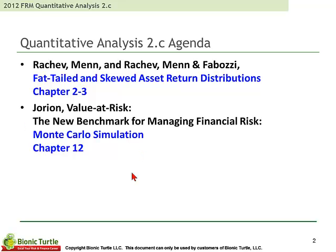We continue with two readings that reappear in the FRM from prior years. First, two brief chapters from Raychev on discrete distributions and continuous probability distributions. And then a chapter that reappears from Jorion's Value at Risk — that's the textbook, third edition, not the handbook — on Monte Carlo simulation.